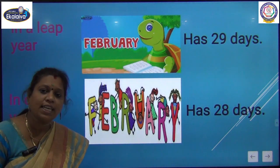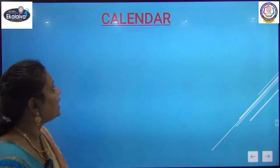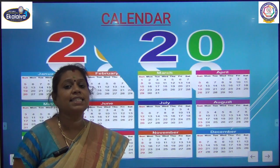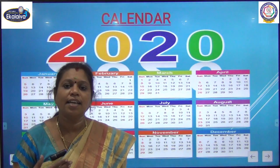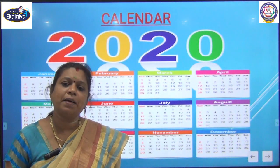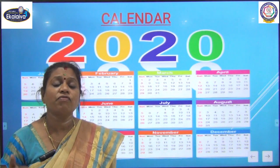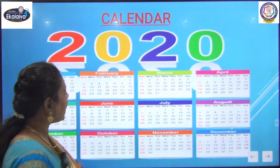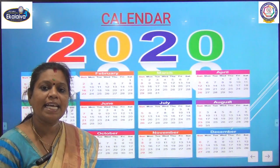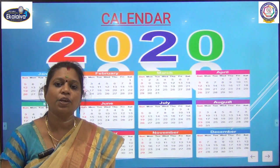In a leap year February has 29 days; in other years it has 28 days. Now we will see the calendar. A calendar tells us about the month, day and date together. We can see all the months in a calendar, and each month shows us its days and dates. This is a calendar of 2020 — it shows all the months, days and dates together. That's all for today's class, children. Thank you.